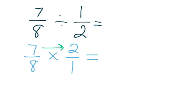And then you follow the steps for multiplication by multiplying straight across. So 7 times 2 is 14, 8 times 1 is 8. I know 8 can go into 14 one time, 14 minus 8 is 6, so I have 1 and 6 eighths.